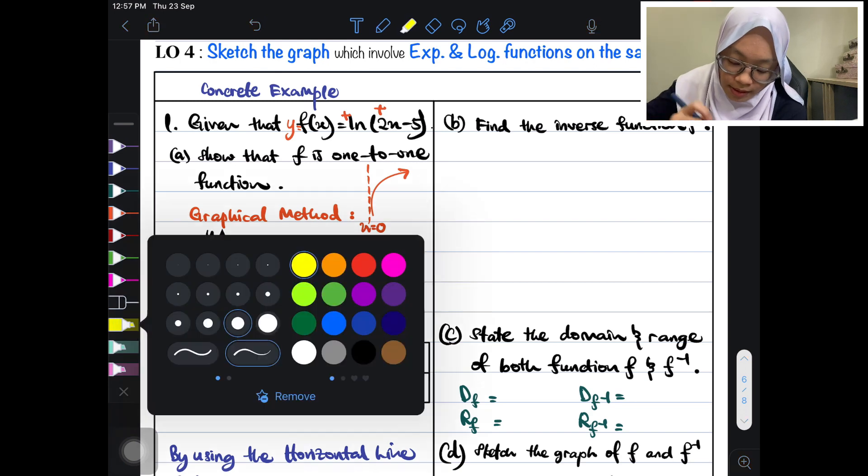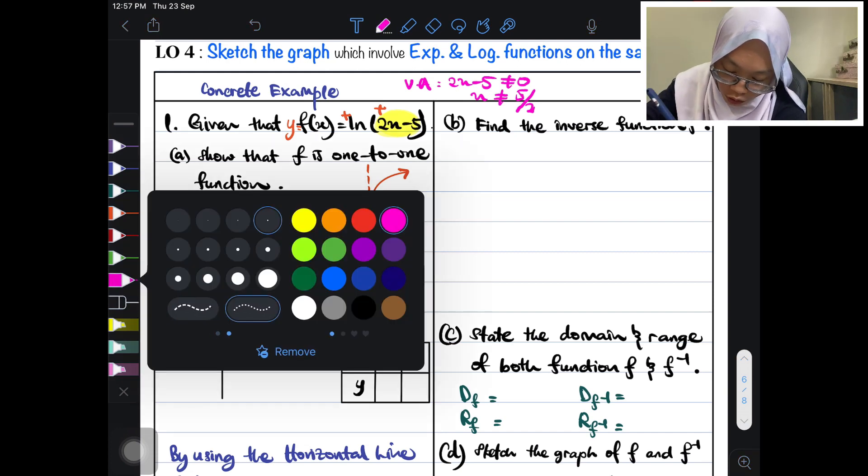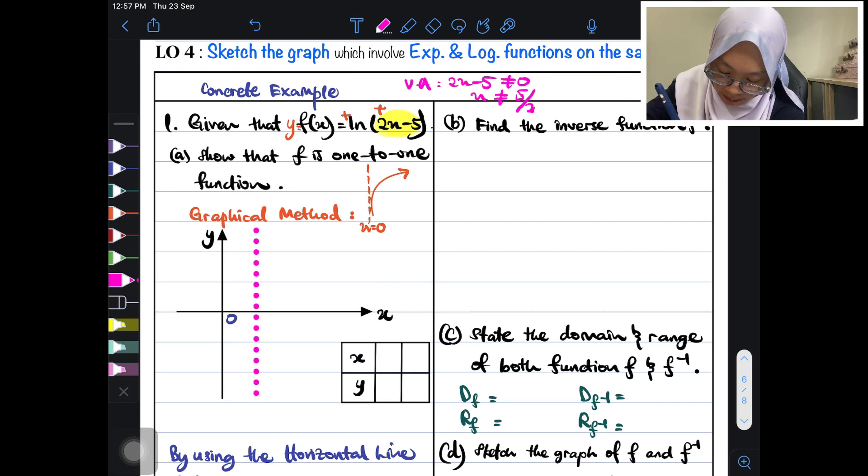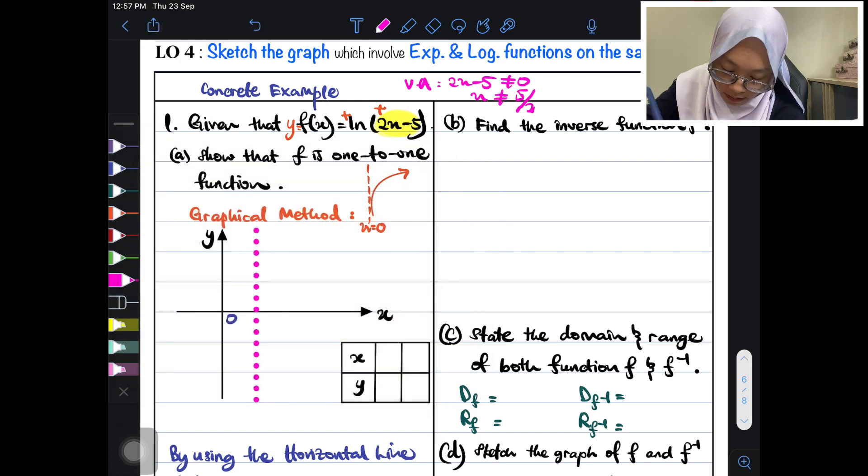Dia punya asymptote dia adalah vertical asymptote x equals to 0. Asymptote ni kena hafal ya. And then, the thing is, sekarang ni untuk soalan ni, asymptote dia bukan x equals to 0. Vertical asymptote dia kali ni adalah 2x minus 5 cannot be 0. So x cannot be 5 over 2. So asymptotnya adalah 5 over 2, that is the asymptote.